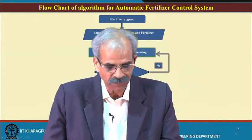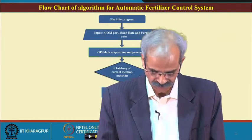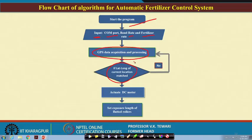This is the flow chart with the algorithm for automatic fertilizer application. The program starts, takes inputs such as the compound board rate and fertilizer rate, processes the GPS data — the latitude and longitude information shown earlier — and checks if the current location's latitude and longitude match the target. Based on the match, the DC motor actuates and sets the exposure length, as shown in the GUI earlier.